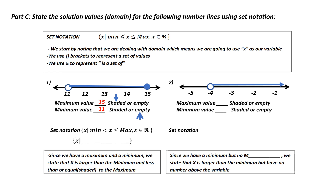Because I'm talking about domain, I do the squiggly brackets and an x. I ask myself: what is my lowest value? That is 11. I know that x is going to be bigger than 11, but not equal to 11, because it was empty — meaning 11 is not included. I also know x is going to be less than or equal to 15 because 15 is included since it was shaded. Finally, I state that x is a subset of all real numbers.